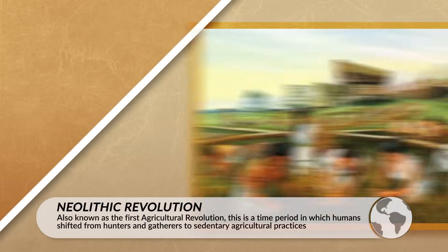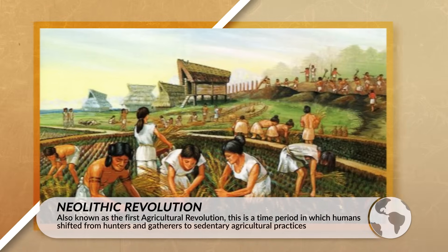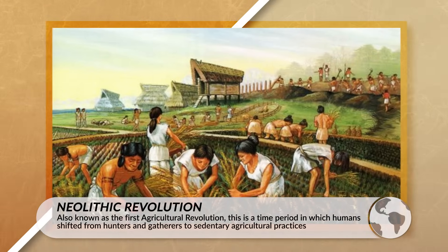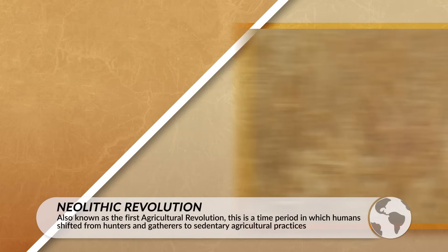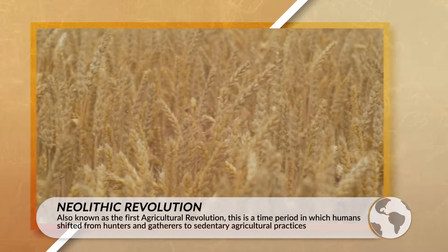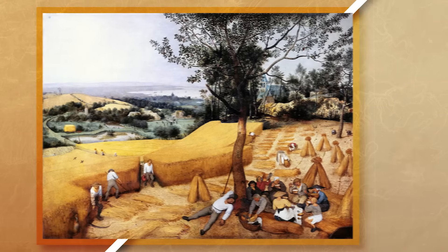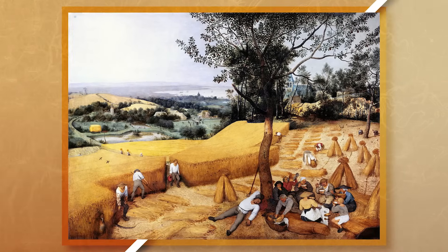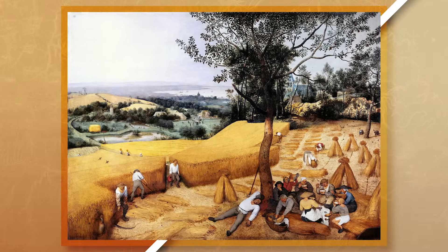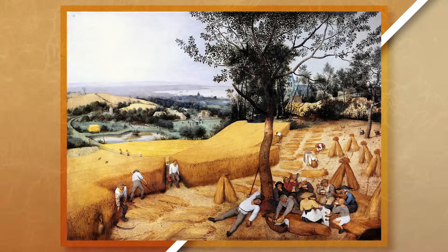The first agricultural revolution, also known as the Neolithic Revolution, allowed for complex societies to emerge. This was due to the fact that society could now have a food surplus and no longer needed everyone to hunt or gather food, resulting in specialization.